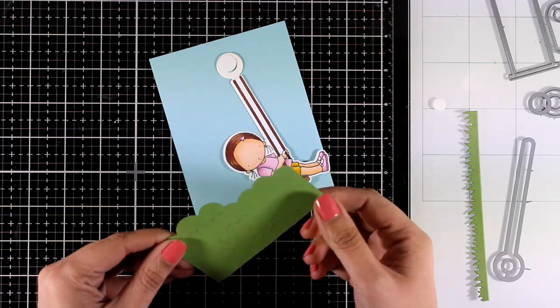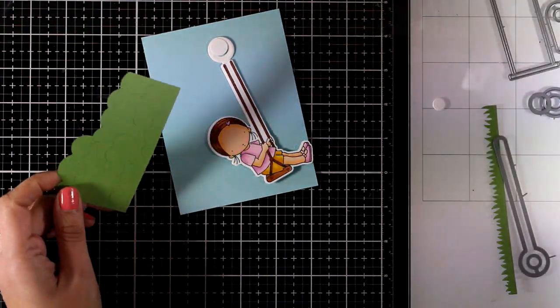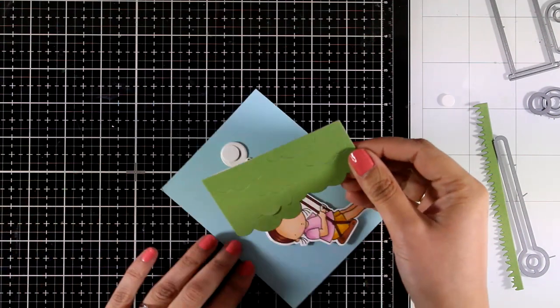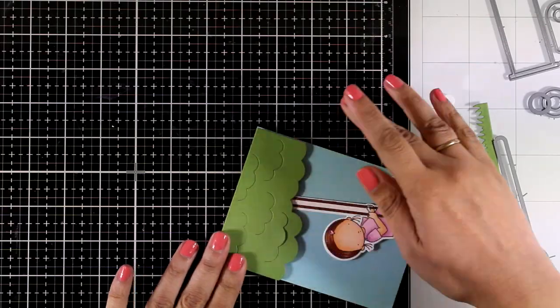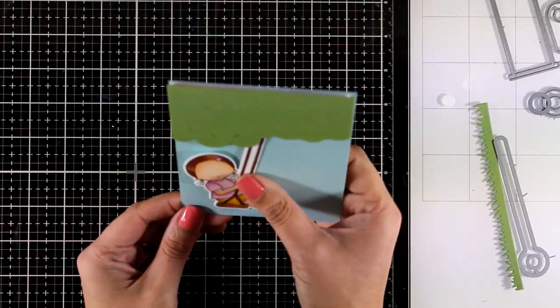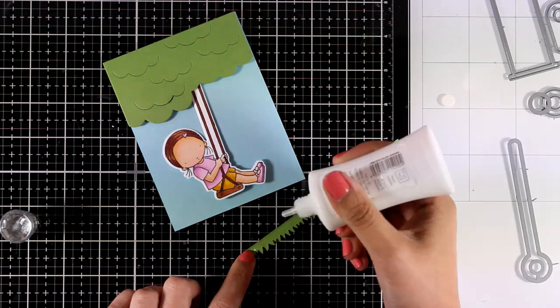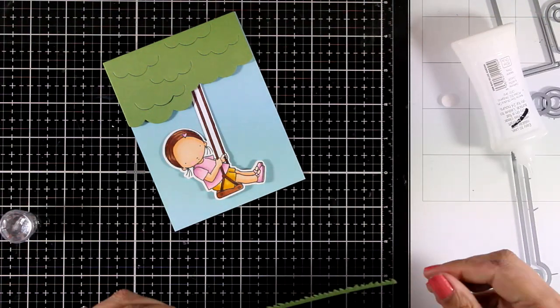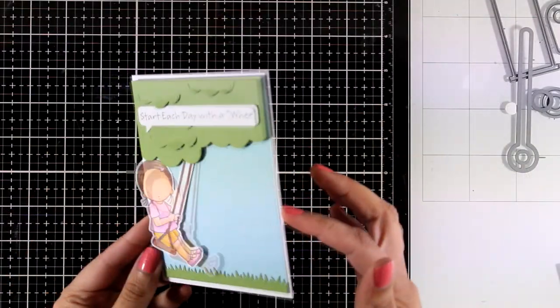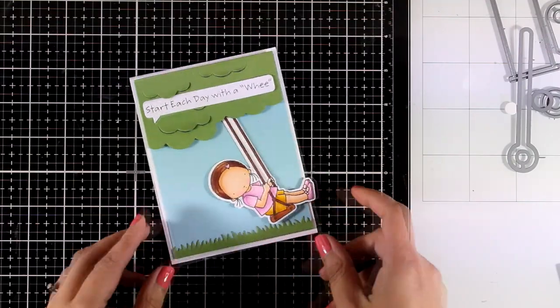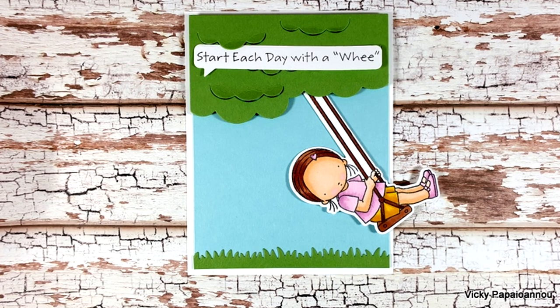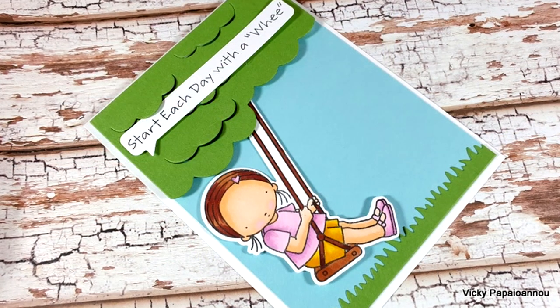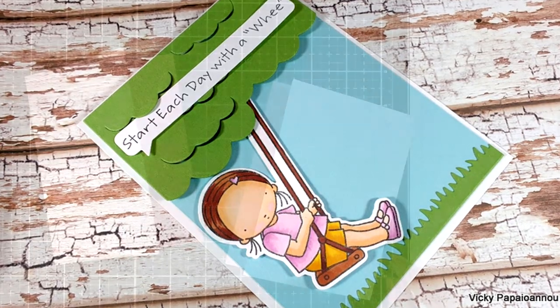Now of course I have to cover up that mechanism somehow, and that's where that tree comes in. I have used foam tape all around, making sure that I don't block the bottom as I want my girl to swing easily. I also used the die to cut out this grass and I'm going to stick it down so that I have a ground for my scene. I also added a sentiment from the same stamp set as the little girl. You can of course take your card a step further if you stick down little flowers or even clouds to your sky, or birds and butterflies flying around. There are so many ways to dress up this design even more.